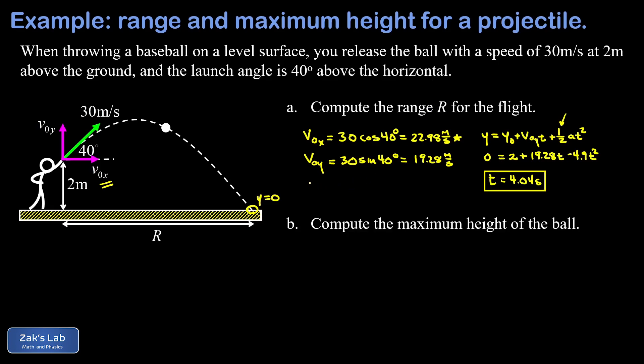Now we're thinking about our horizontal analysis: x equals x naught plus v naught x t. We're going to call our initial x position zero and our final x position, that's what we call the range. So we have the range is equal to the x velocity, that's 22.98, that never changes, so this is really just a distance equals rate times time kind of problem. We know how long it's doing this, 4.04, and when we run the numbers on this we get 92.8 meters for the range.